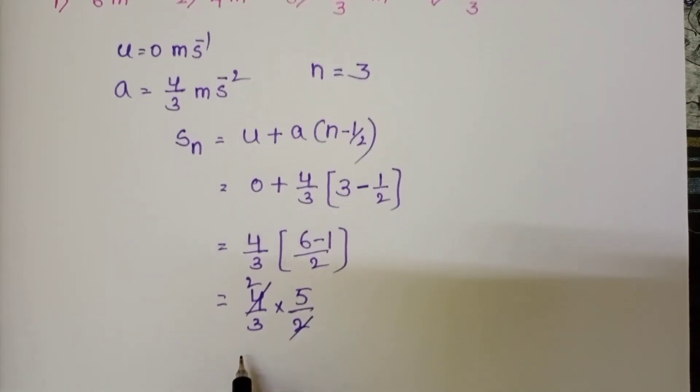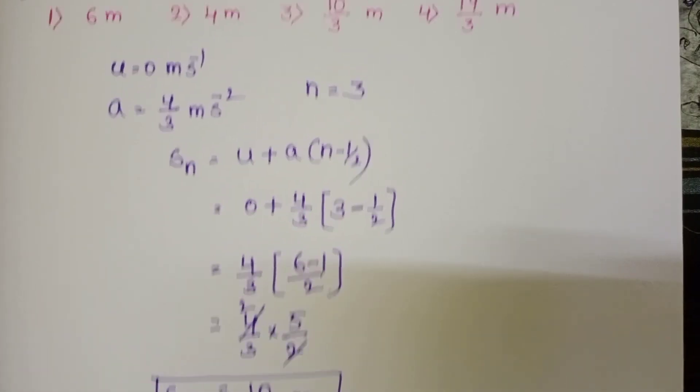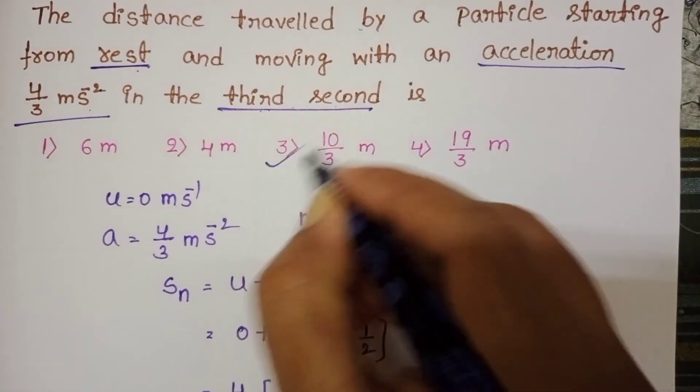That equals 10 by 3 meters. Distance travelled by the particle in the third second is equals to 10 by 3 meters. So the third option is correct.